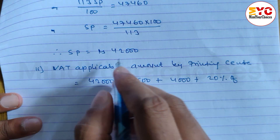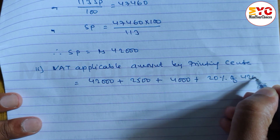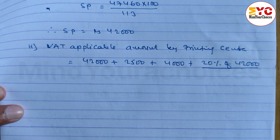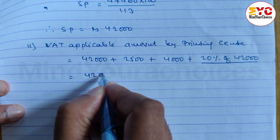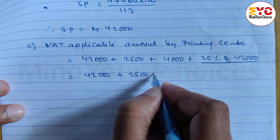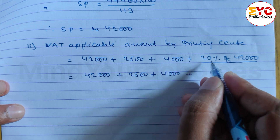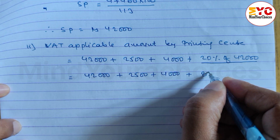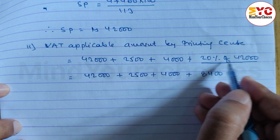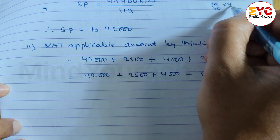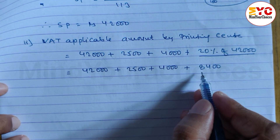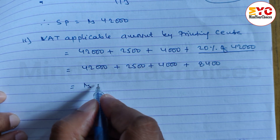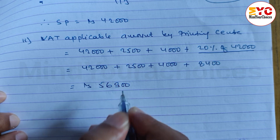20% profit on the original price of Rs. 42,000. So: Rs. 42,000 plus transportation charge Rs. 2,500, plus local tax Rs. 4,000, plus 20% divided by 100 into Rs. 42,000, which equals Rs. 8,400 profit. When we add all these together we get Rs. 56,900 as the VAT applicable amount for the printing center.